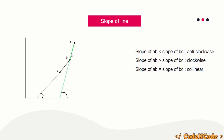The higher the angle made with the x-axis, the higher the slope. As you can see in the drawing, the slope of line AB is smaller compared to the slope of line BC, and you can clearly see the points A, B, C are anti-clockwise. So: if slope of AB is smaller than slope of BC, the points are anti-clockwise; if slope of AB is greater than slope of BC, they are clockwise; and if the slopes are equal, they are collinear.